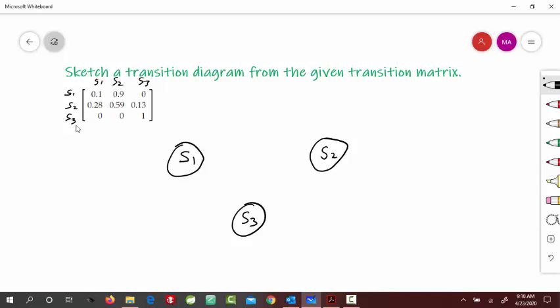Now from here you can see that this is 0.1. This is a transition from S1 to S1 column, so S1 to S1 is 0.1. We would draw the arrow here, starting from S1 and coming back here, and we label this value 0.1.